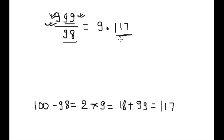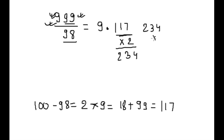Multiply by 2, giving 4, 3, 2 — so we write 2, 3, 4 here. And again multiply by 2 because this is again 3-digit and it should be 2-digit, giving 8, 6, 4 — written as 4, 6, 8.